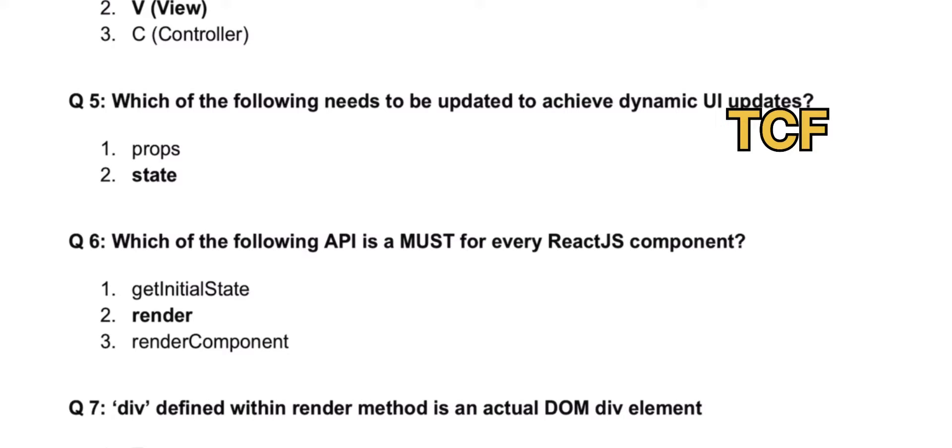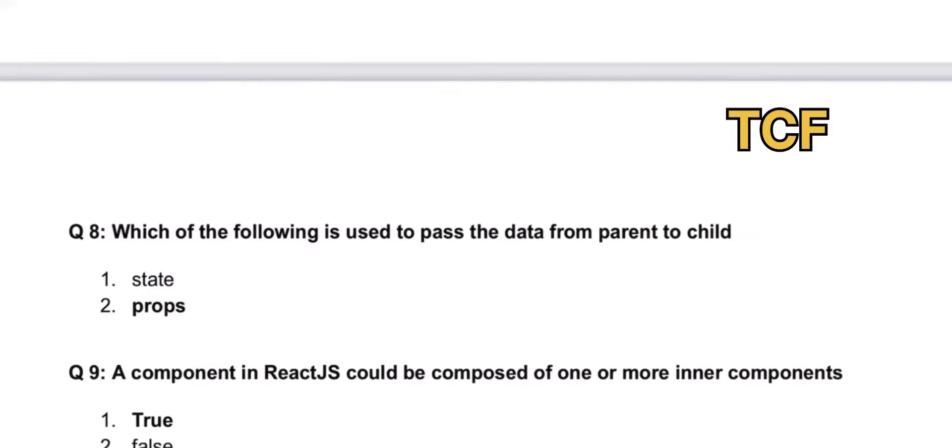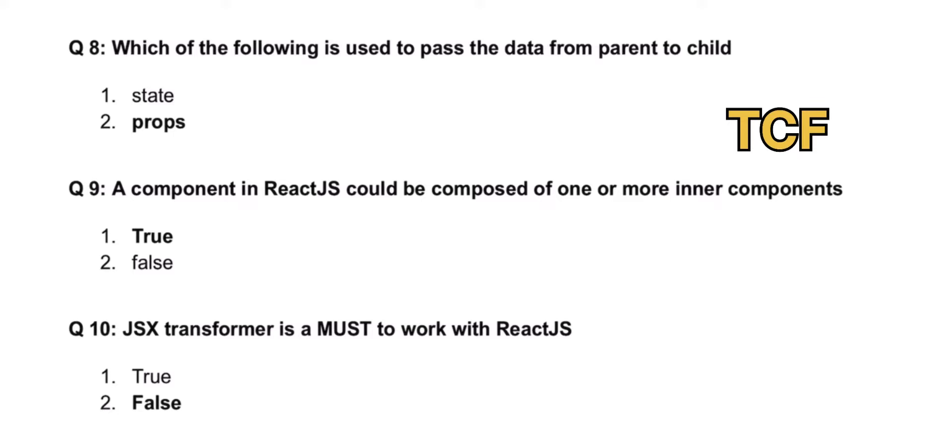Which of the following APIs is a must for every React.js component? That is render. Div defined within render method is an actual DOM element - that is false. Which of the following is used to pass data from parent to child? That is props concept.